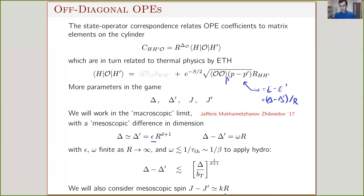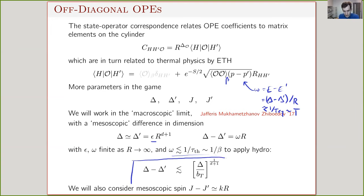We need this frequency to be small — to be in the hydrodynamic regime — in units of the hydro cutoff, which is the equilibration time. In a strongly interacting system, this is essentially the temperature. Requiring this frequency to be small in units of temperature constrains how different the dimensions of the two operators can be: the difference can still scale with Δ but to a smaller power. There's a similar window for spins — they can be the same or different, as long as not too different. This will be the regime of applicability of these hydrodynamic results.